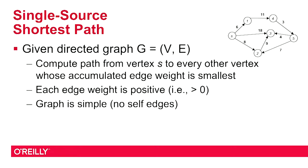We have to make some assumptions — namely that each edge weight is positive, can't be zero even, it has to be positive. I'll also assume that the graph is simple, which means there are no loops of an edge that goes from a node back to itself, and between any two vertices there's only one distinct edge between them.